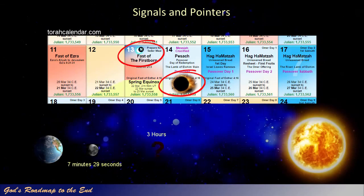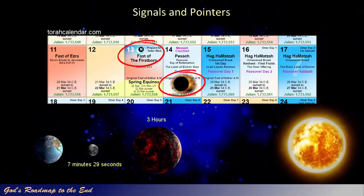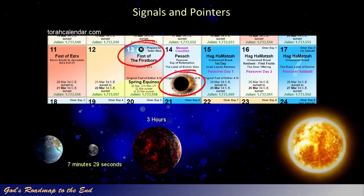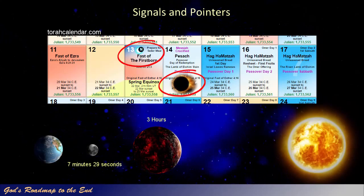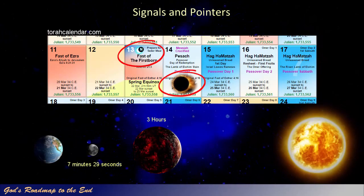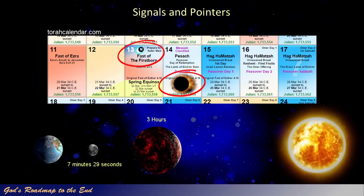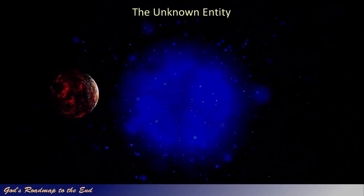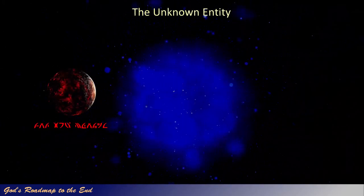The maximum duration for a full solar eclipse caused by the moon can never exceed 7 minutes and 29 seconds. To have a three-hour eclipse of the sun would require a celestial body of substantial size to move between the earth and the sun. Why did nobody see a large object in the skies during Yeshua's crucifixion? And can we find any evidence for the existence of a celestial object that is not commonly known to humanity?